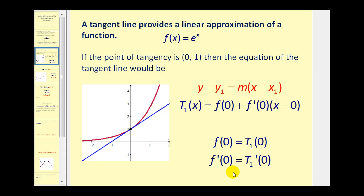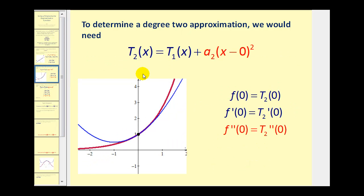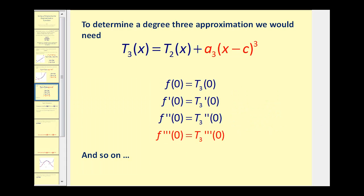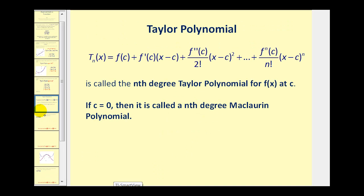Now if we want to find the degree two polynomial approximation, we would take the linear approximation and add a quadratic term. The function values would have to agree, the first derivatives would have to agree, and now so would the second derivatives at x equals zero. We could solve for a sub two using this condition. This pattern continues for the degree three polynomial approximation — we take the degree two polynomial approximation and add a degree three term, and we could determine a sub three by satisfying the equation where the third derivatives are equal. If we keep doing this, a pattern develops which leads to the formula for a Taylor polynomial.